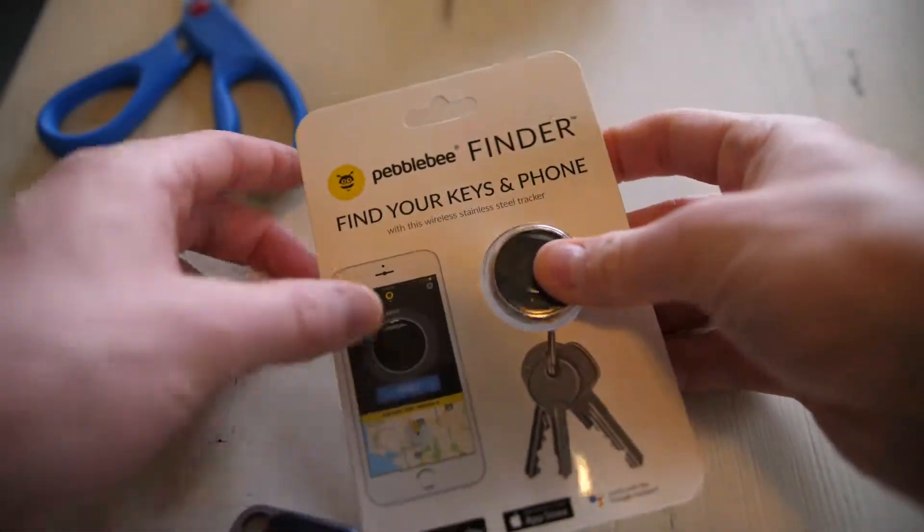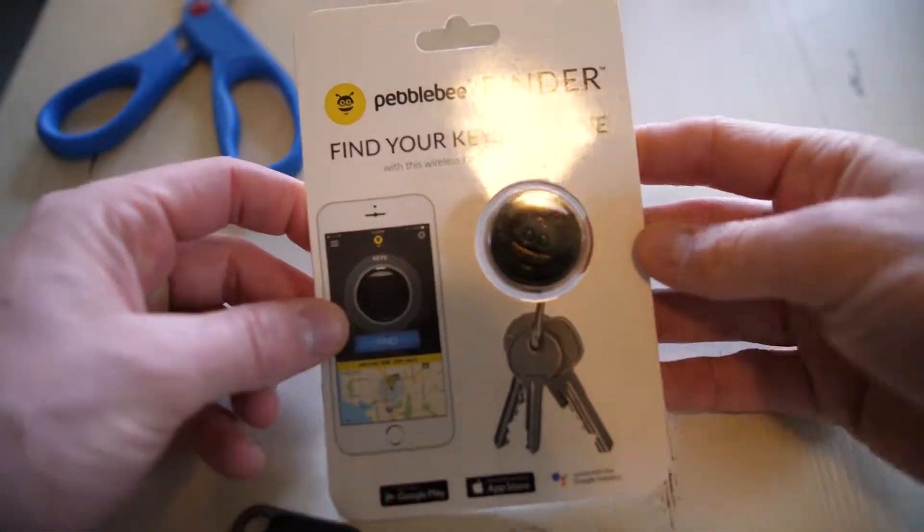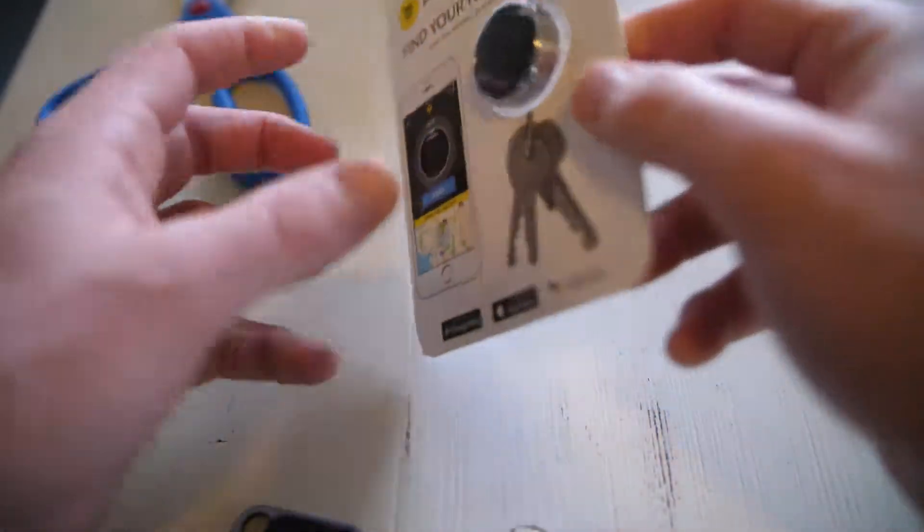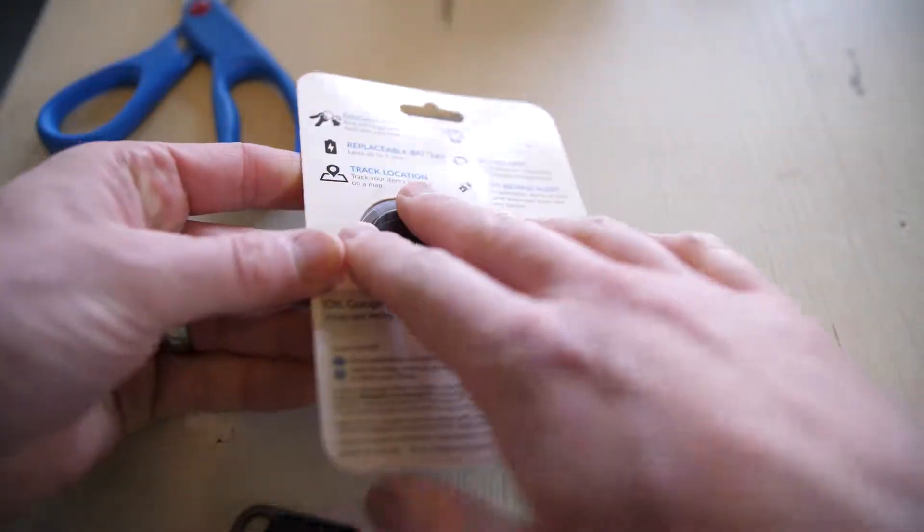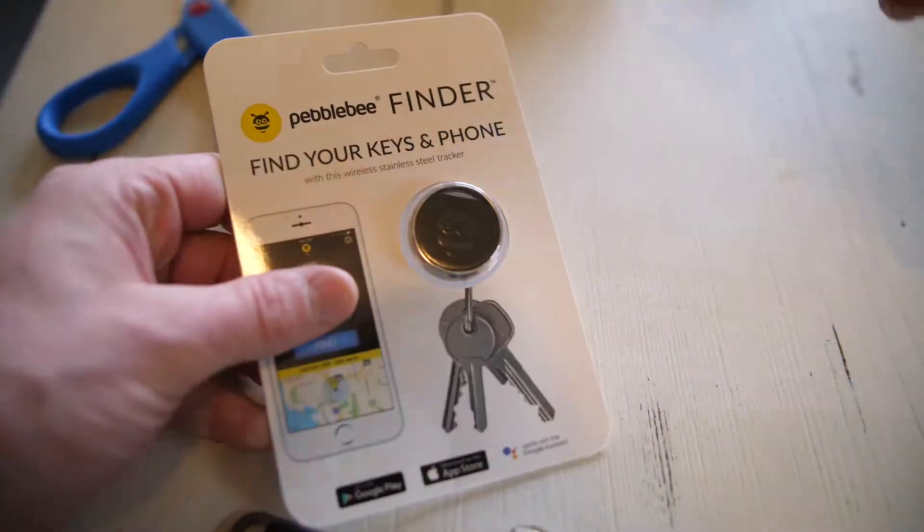Alright, so I'm going to do an unboxing here of the Pebblebee Finder - find your keys and find your phone. This one's kind of different. It's in this clamshell type plastic, you know, most of the other devices we've been looking at are all in boxes.